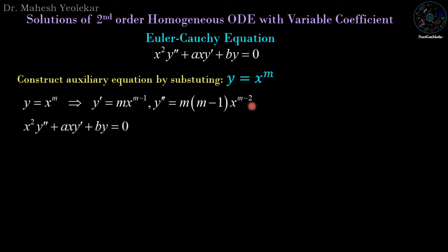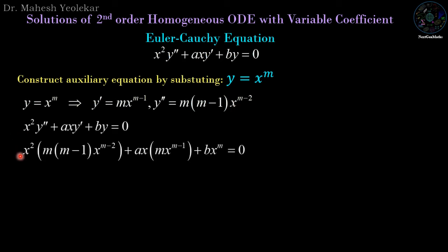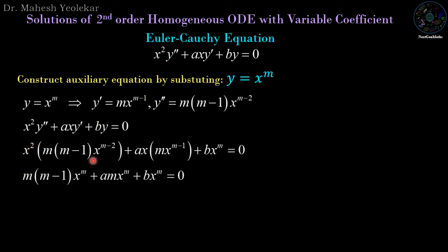Now substitute all these values into the Euler-Cauchy equation. We have x squared times m(m minus 1) x power m minus 2, plus ax times m x power m minus 1, plus b times x power m equal to zero. Simplifying, x squared times x power m minus 2 gives x power m, and x times x power m minus 1 gives x power m. Factoring out x power m, we get m(m minus 1) plus am plus b equal to zero.